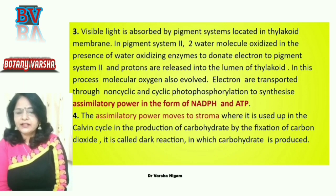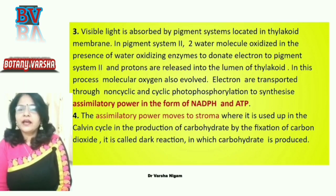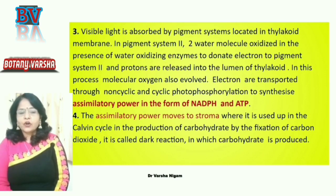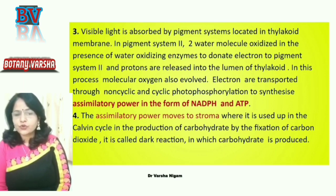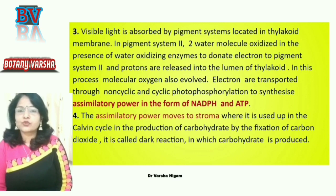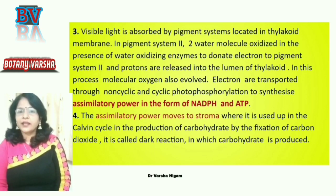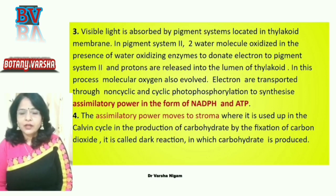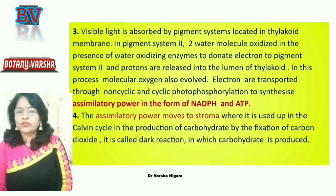In photosynthesis, visible light is absorbed by pigment systems located in the thylakoid membrane. In the thylakoid membrane, two pigment systems are found: pigment system 1 and pigment system 2. Two molecules of water are oxidized in the presence of water-oxidizing enzymes to donate electrons to pigment system 2. Protons and electrons are released — the electrons are transferred to pigment system 2, which becomes photo-excited.